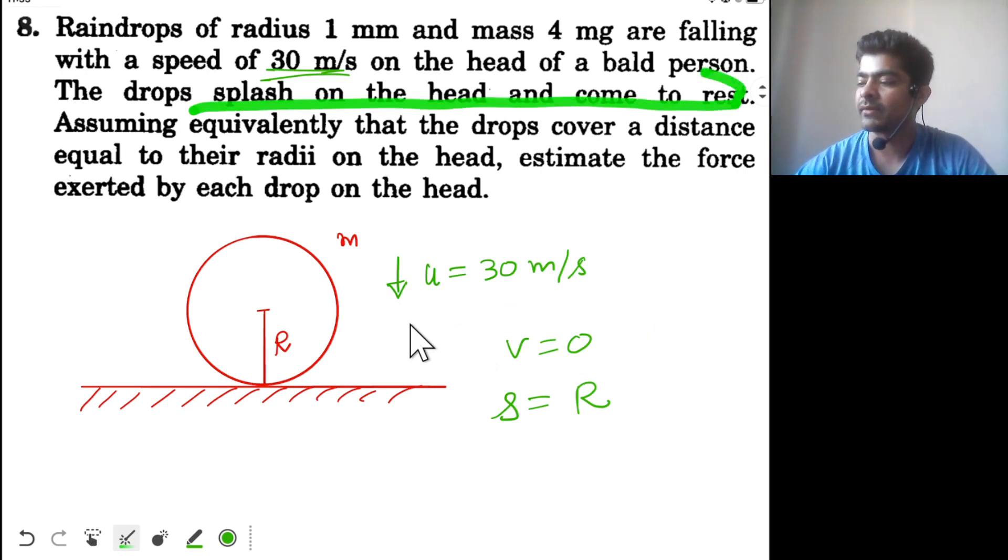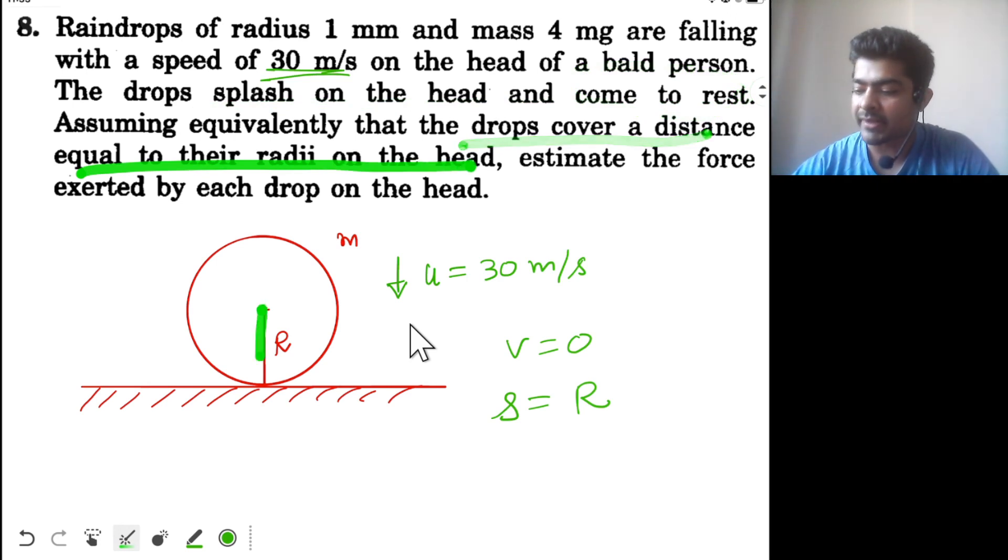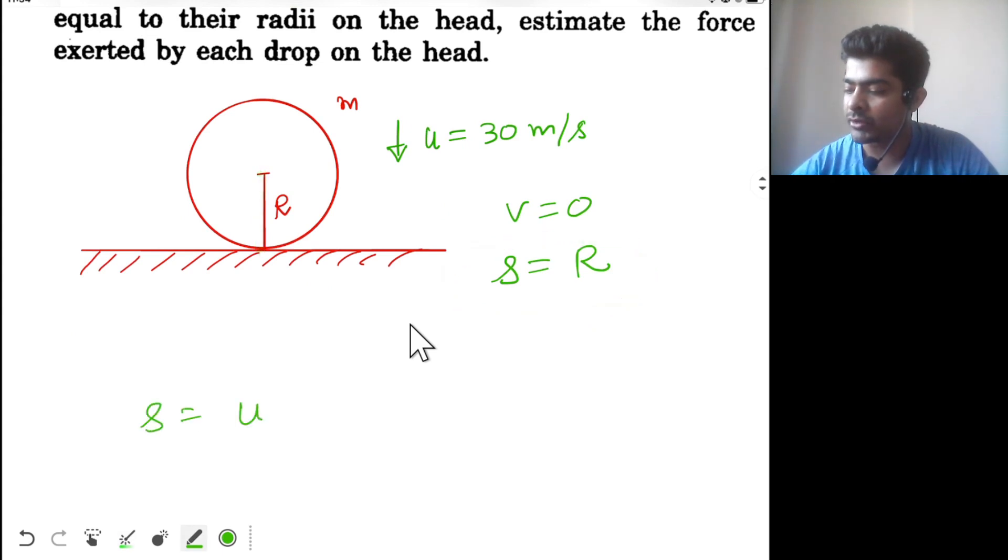They come to rest and are covering a distance equal to the radii, so s equal to r. So we apply the equation v squared minus u squared equal to 2as.